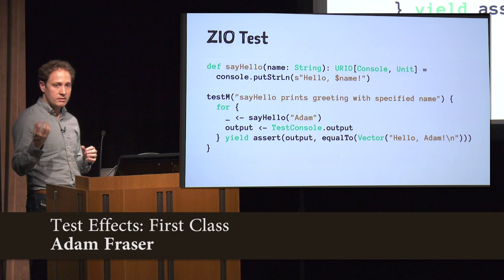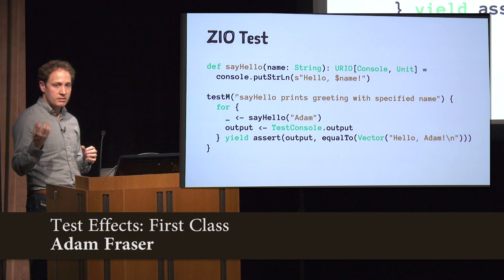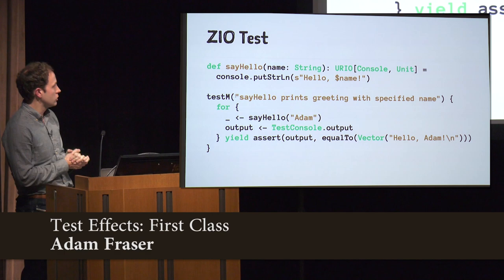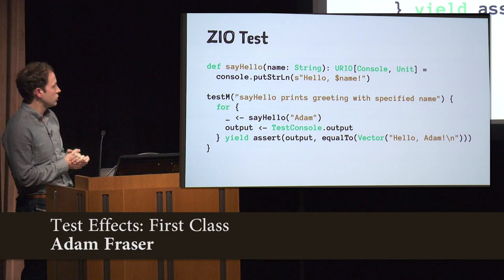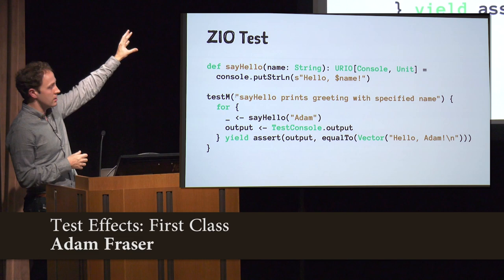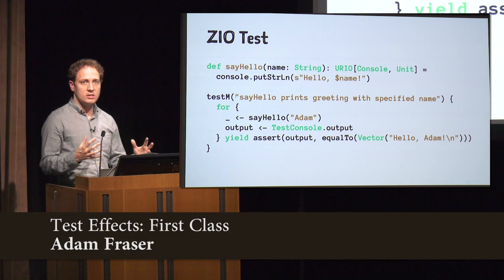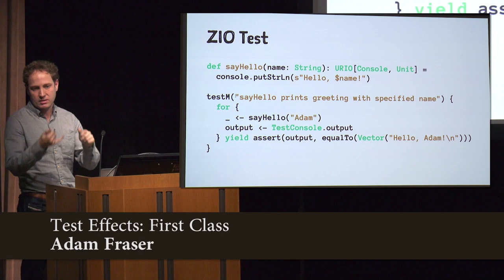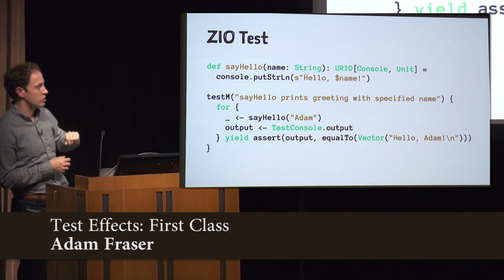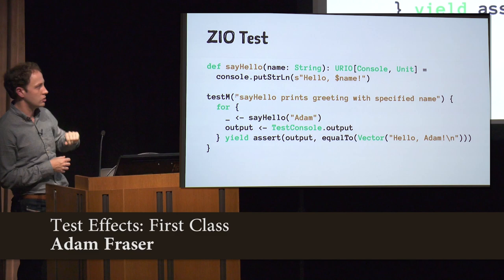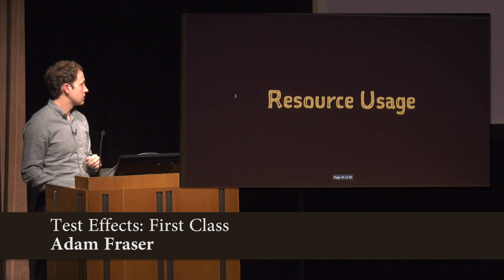How about dependencies on other services? This is where the R type in ZIO really shines. Because if we wrote this program with ZIO using the environment, we would use console.putStrLn, which would normally print something to the console but is just a service in the environment. So we can replace it with a test implementation. ZIO Test has out-of-the-box test implementations for all the standard environment types — things like Console, Clock, Random, System. So all these things become super testable: I do my same effect, then I call this TestConsole object and get the output, and I can just make an assertion on what that output is. I don't have to rewrite any of that stuff myself.